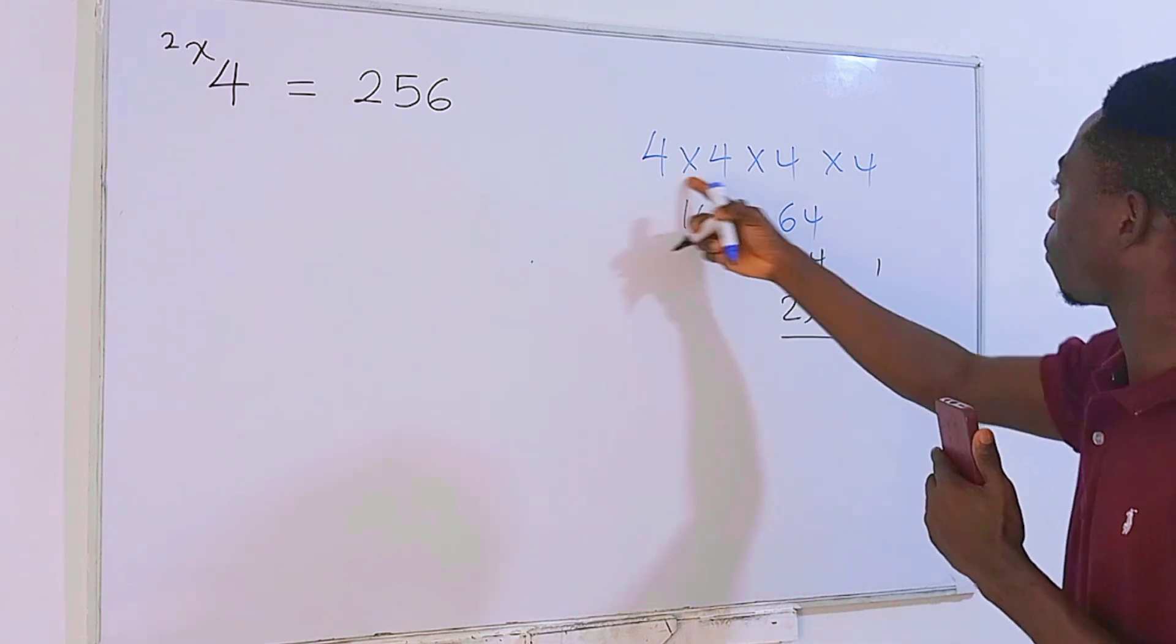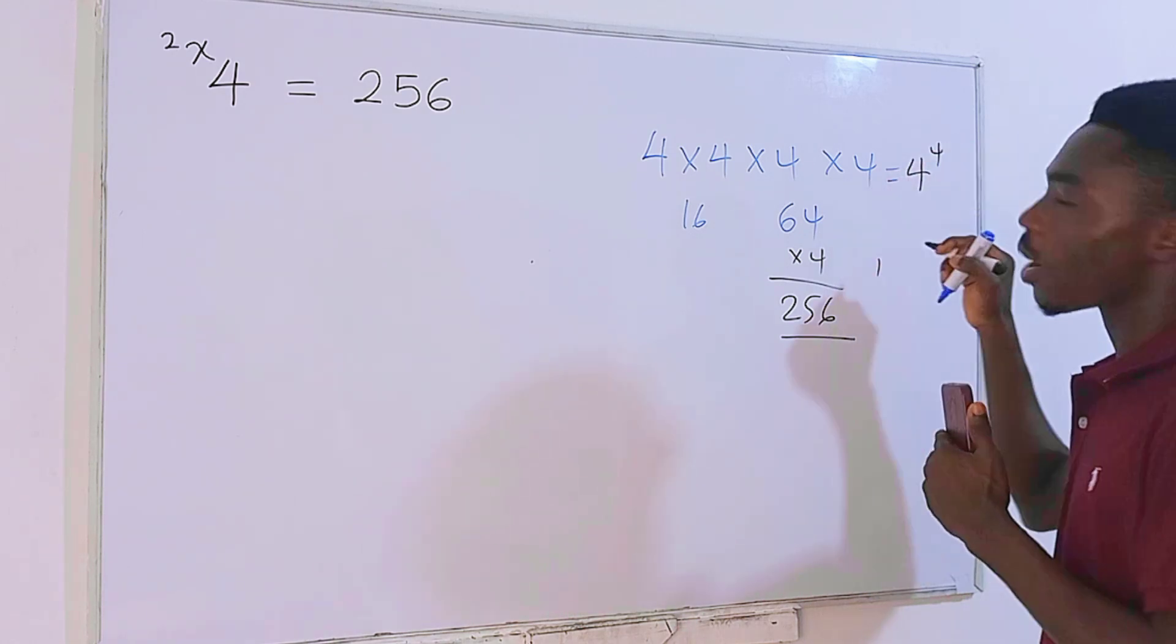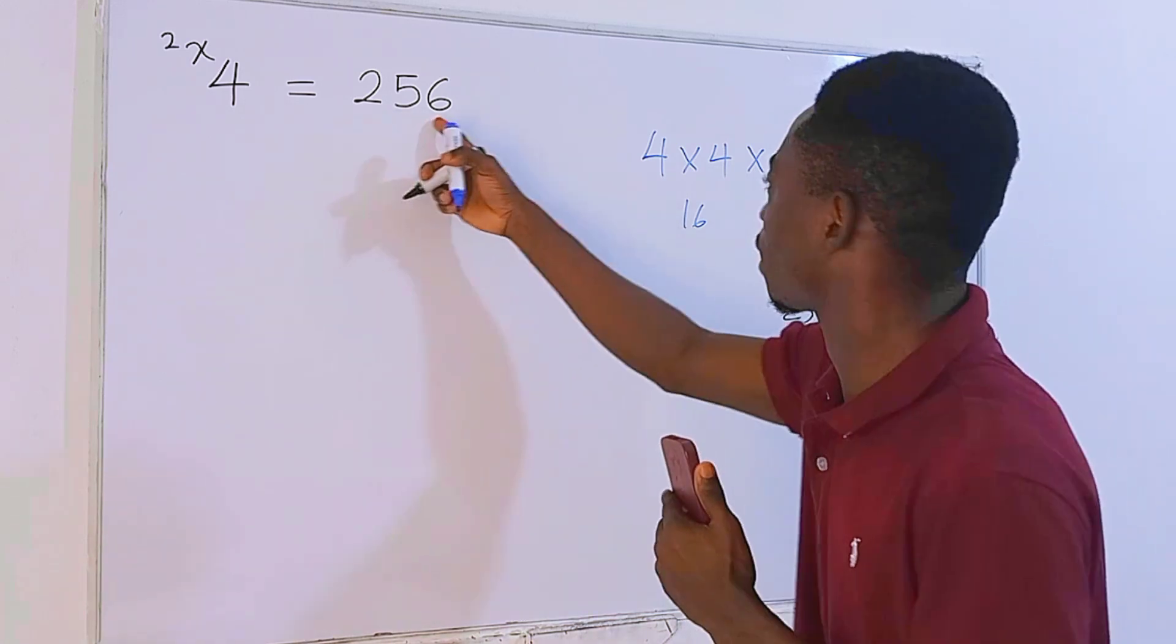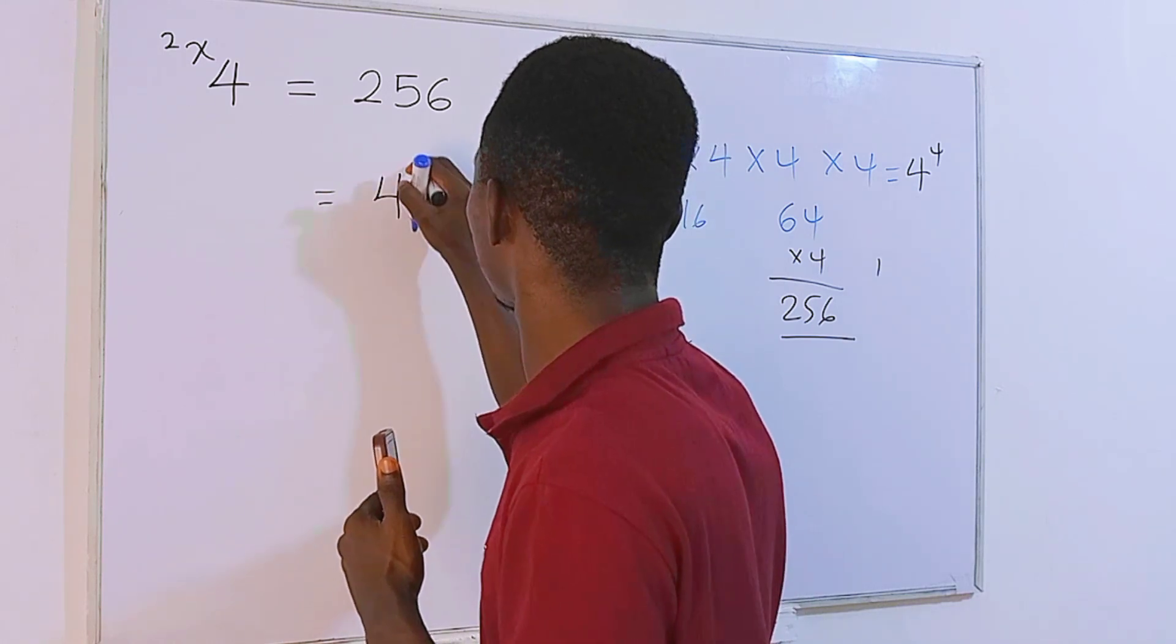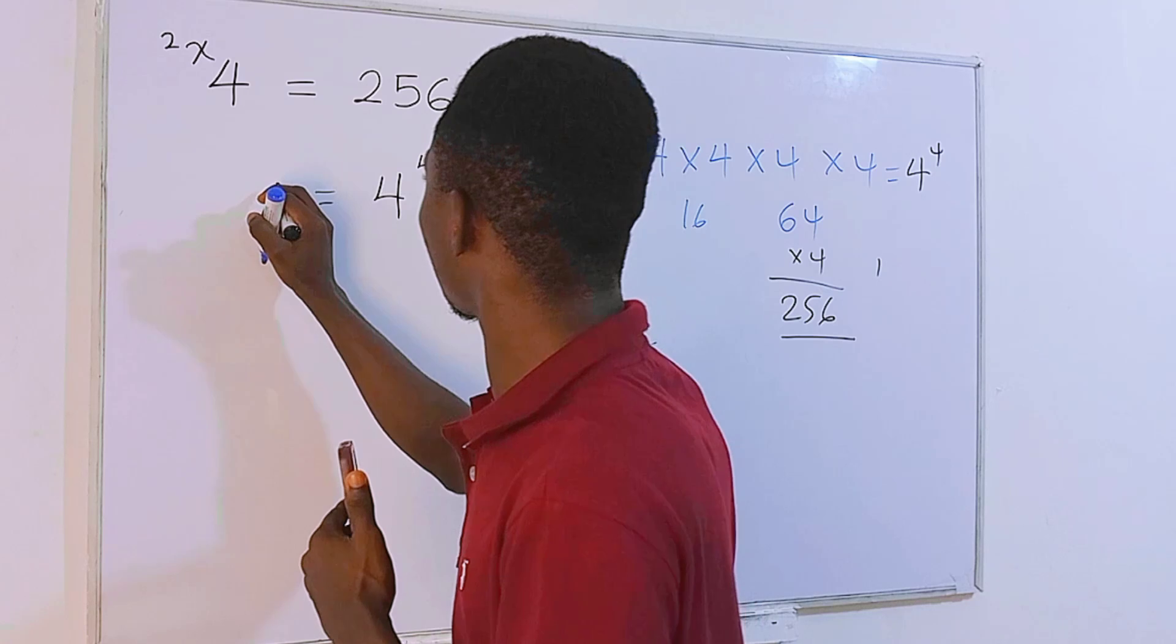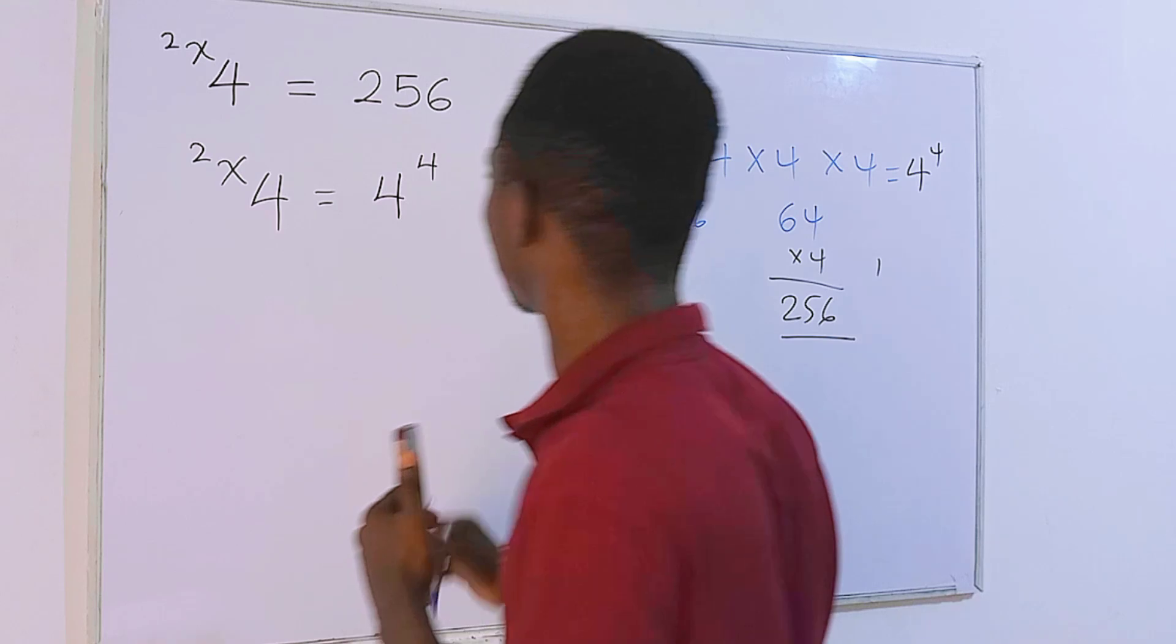This means that we can write the whole of this as 4 to the 4th power. So in place of this whole thing, I'm going to put this. We have 4 to the 4th power. Then the left hand side, we have 4 tetrated to x tetrated to 2.